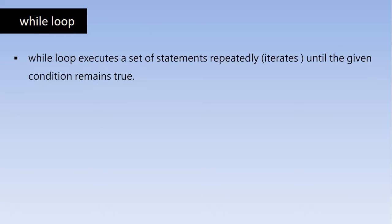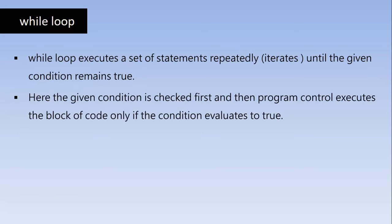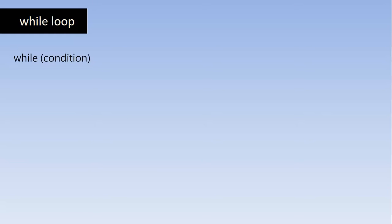First we will look at how the while loop works. The while loop executes statements repeatedly until the given condition remains true. Before writing the block of code that will be executed, we write the condition. The compiler checks the condition first, then executes the block of code. The condition is checked every time and the code is executed every time until the condition is true.